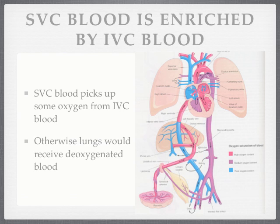The superior vena cava blood needs to be enriched. The right ventricle pumps blood to the two lungs, but the lungs have no access to oxygen — we are not breathing when we're in the womb. So the lungs are relying on oxygenated blood in order to grow and develop. If all that was pumped was fully deoxygenated blood, they'd be in big trouble. The addition of some oxygen from the inferior vena cava's umbilical-enriched blood, added somewhat to the superior vena cava blood, helps give some oxygen to the lungs. That's a good thing.